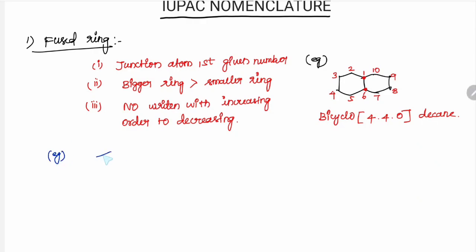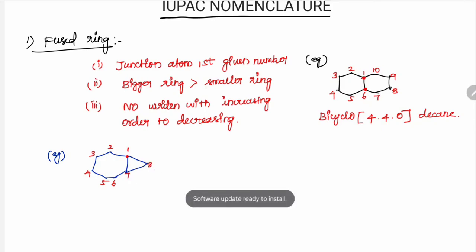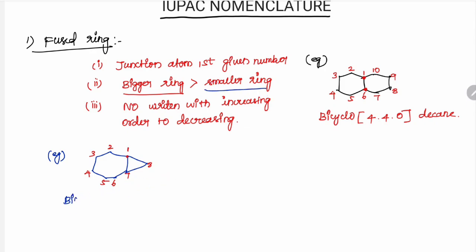Another example: 7-member ring with 3-member ring — this is a bicycle. We number: 1, 2, 3, 4, 5, 6, 7, 8. Here the junction atoms are identified. The bridge position has no carbon — nothing at the bridge. There are 8 carbons available, so the base name is Octane.